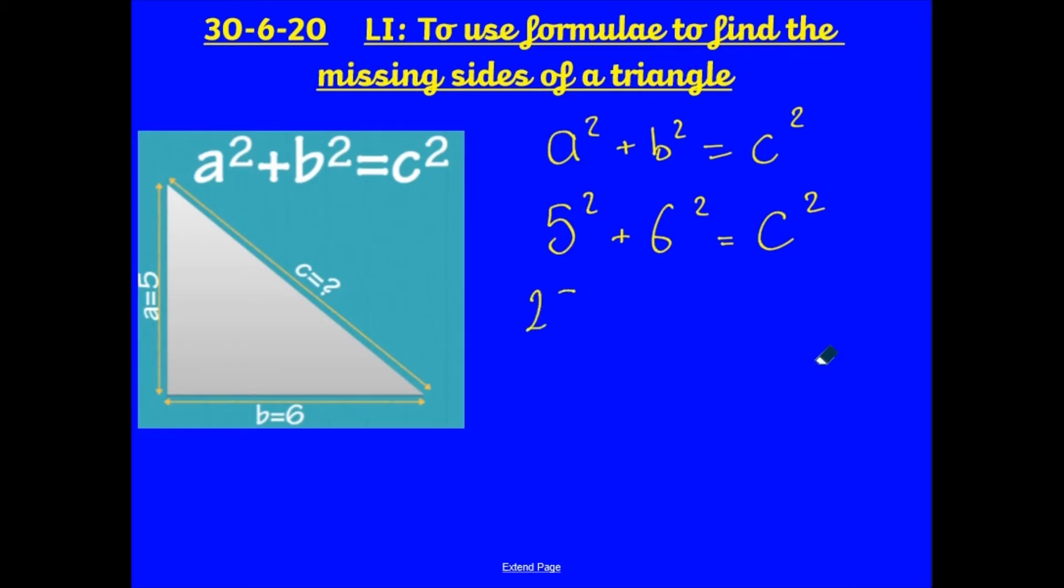5², 5 times 5 is 25, plus 6 times 6, that is 36, is equal to c². So, 25 + 36 is going to be 61, is equal to c². I'm just going to flip that around just to make it a little bit easier to read. So, c² = 61.